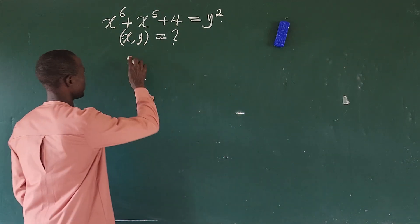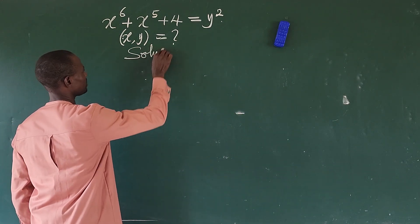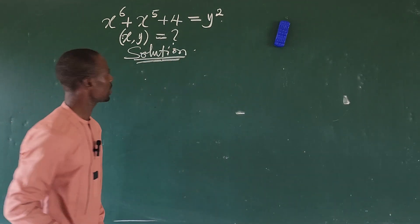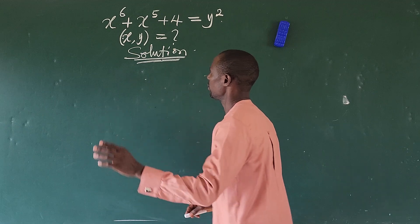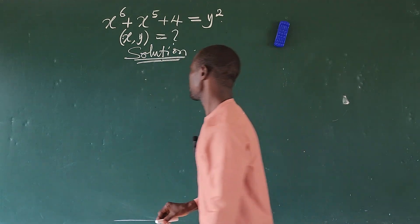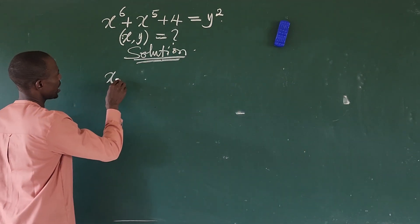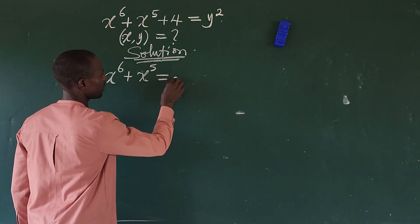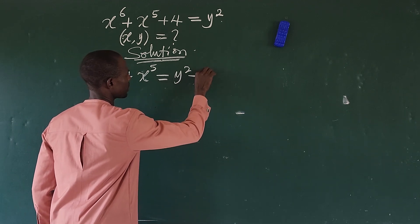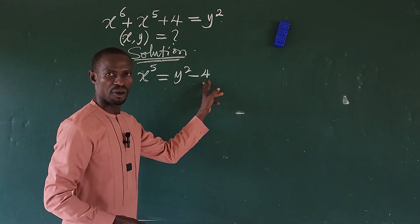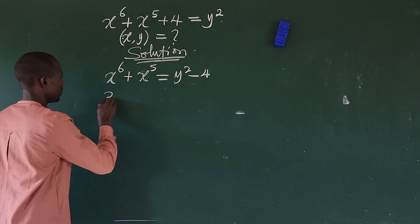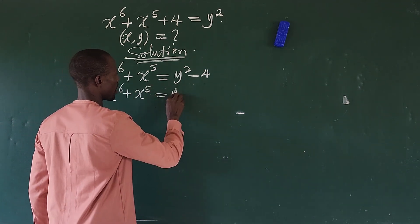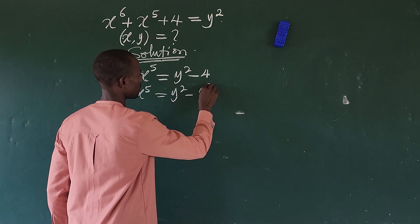Let's go step by step with our solution. I want to move the 4 to the right side of the equation, so this gives us x to the power of 6 plus x to the power of 5 equals y to the power of 2 minus 4. We can rewrite 4 as 2 to the power of 2, so we have x to the power of 6 plus x to the power of 5 equals y to the power of 2 minus 2 to the power of 2.